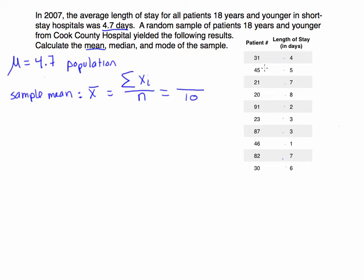I got, after summing this entire column, I got the sum to equal 46. So if I take 46 and divide that by 10, I'm going to get my sample mean or my sample average, which is 4.6. So my sample mean x bar is equal to 4.6 days. And that is the sample mean, not the population mean, but the sample mean.